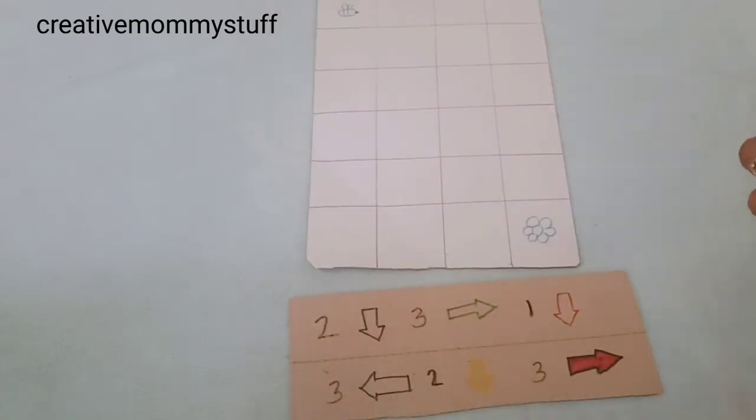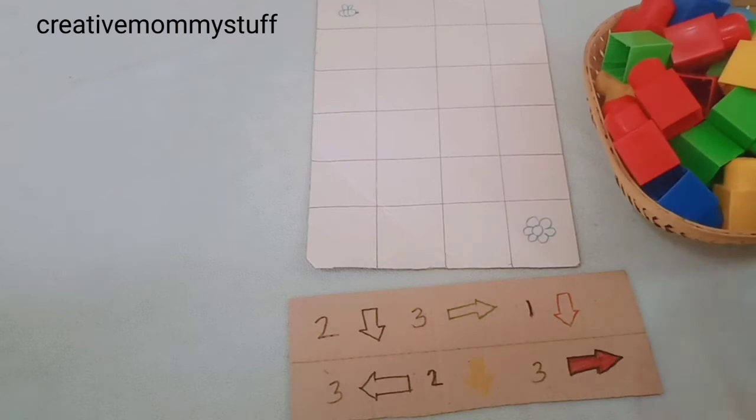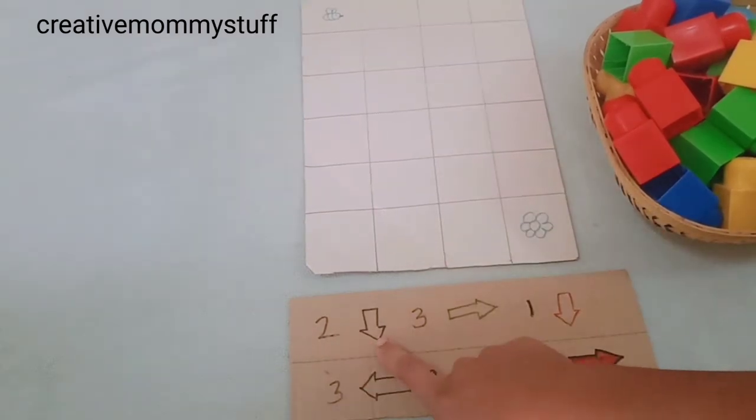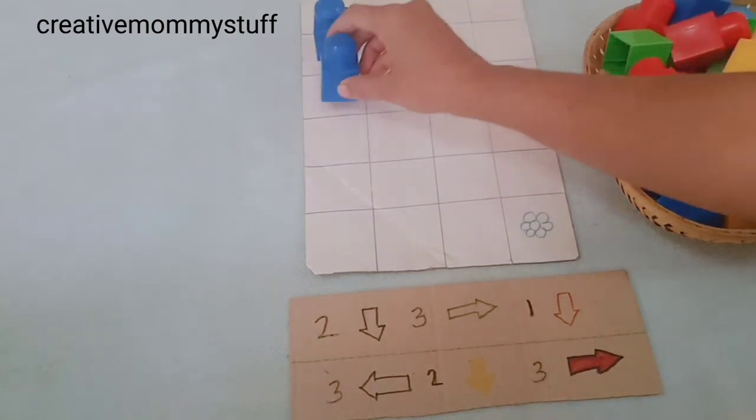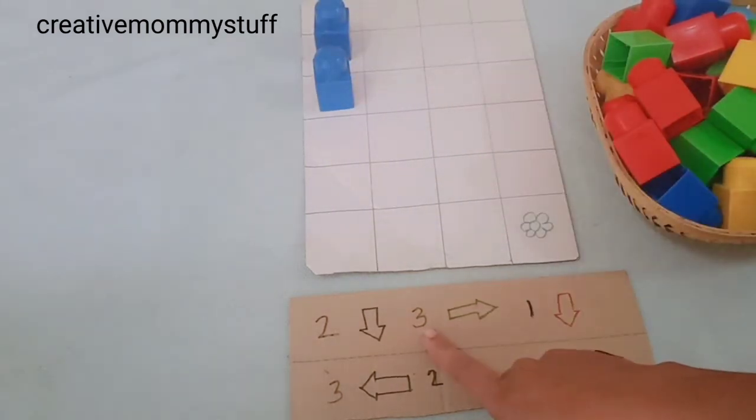Here we of course have our blocks. What we have to do is first two down blue color. So from the bee we have to move two steps with blue color, and then it is three right green color.